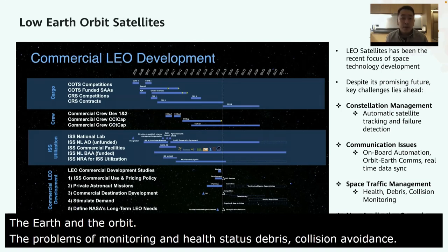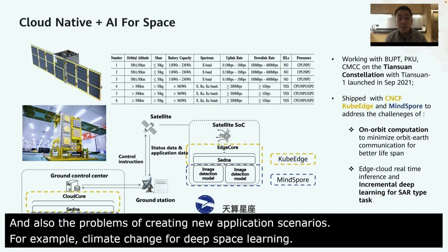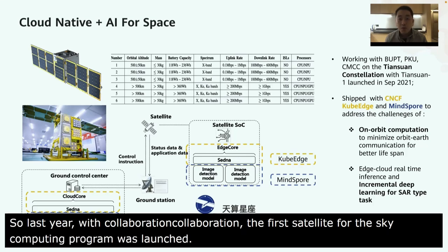There are also problems of creating new application scenarios, for example for climate change, space mining, and deep space exploration. Last year, with collaboration among BUPT, PKU, CMCC, and Huawei Cloud, the first satellite from the Tian Suan — the Sky Computing Constellation program — was launched. With that, we did a truly pioneering experiment combining space technology with cloud native and AI.